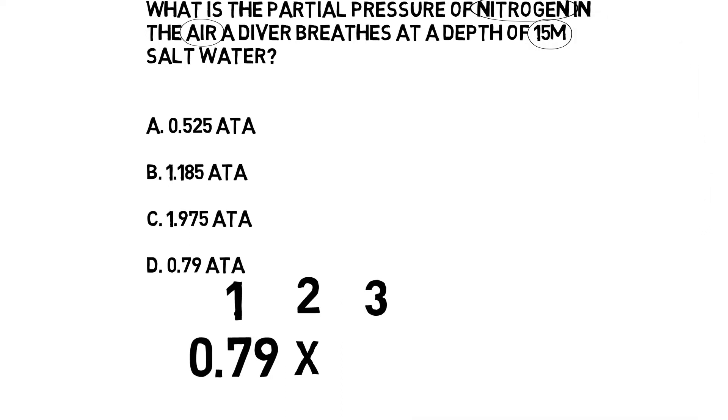The final step is to work out the pressure the gas is under. 15 meters is 2.5 atmospheres in salt water, so we put the 2.5 under step 3. Now we have our calculation, and we need to get out a calculator.